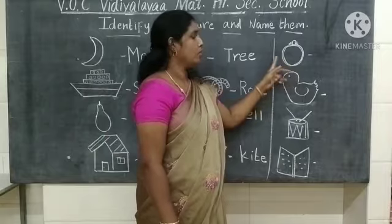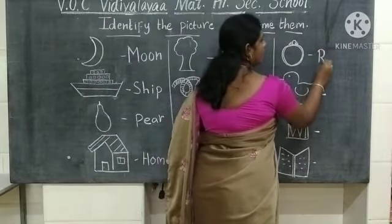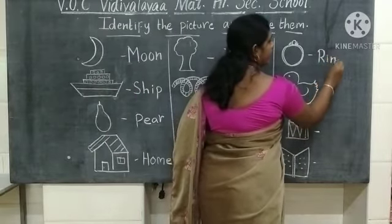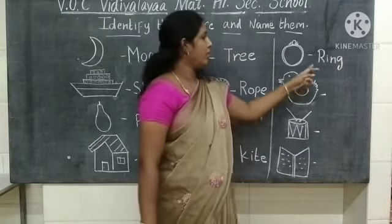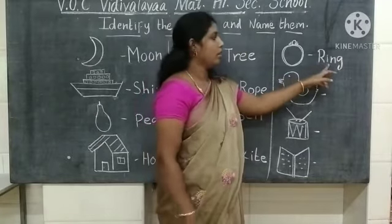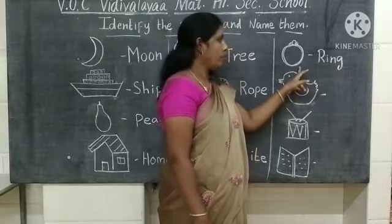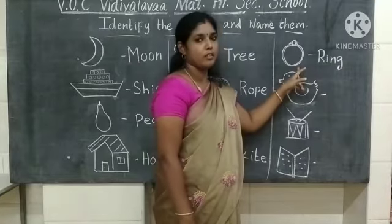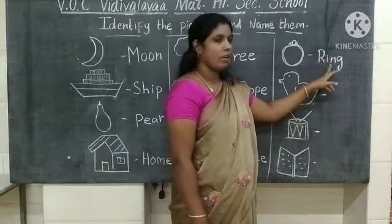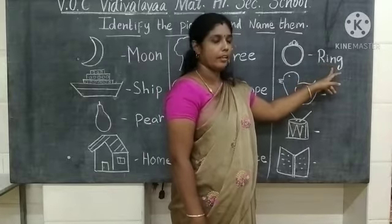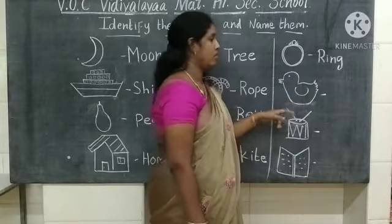What picture is this? This is a ring. What is the spelling of ring? R-I-N-G — ring. What picture is this? This is a ring. What is the spelling of ring? R-I-N-G — ring.